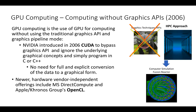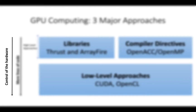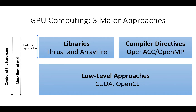When it comes to programming GPUs, we can choose among three different approaches that differ by the level of control they give you on the hardware and by the number of lines of code you need to write. The three approaches are low-level, compiler directives, and library approaches. Low-level approaches like CUDA give you more control on the hardware. Higher-level approaches allow us to write less code than low-level approaches to program the same algorithm. One important point is that you don't need to commit to one specific approach — you can mix different approaches as they can interoperate together.